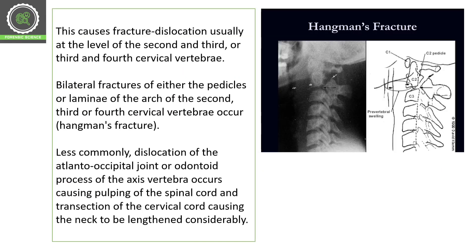Because of the height, weight, and sudden drop, the head is jerked violently from the rest of the body, causing severe fracture and dislocation — usually at the level of C2-C3 or C3-C4 cervical vertebrae. This includes bilateral fracture of the pedicles or lamellae of the arc of the second, third, or fourth cervical vertebrae. This is known as the hangman's fracture, and it is only visible in cases of judicial hanging.